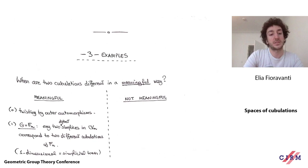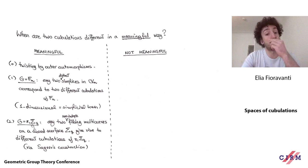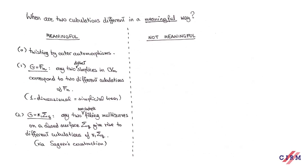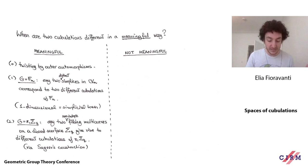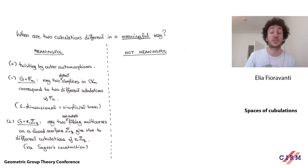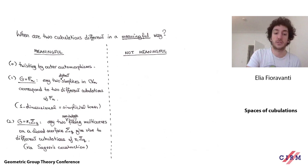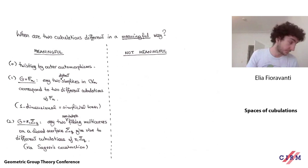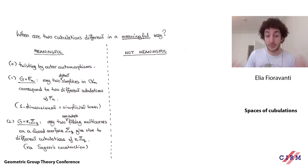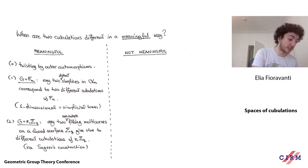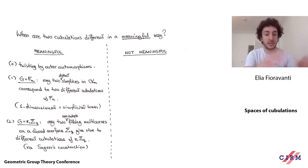A second example is closed surface groups. Whenever you have a multi-curve on a closed surface, you can lift it to the universal cover and consider the dual object to the collection of lifts in the universal cover. By Sageev's construction, this yields a co-compact action on a CAT(0) cube complex. If moreover the multi-curve is filling — meaning it cuts the surface into a collection of disks — you gain properness of the action. So any filling multi-curve gives a cubulation. If you take different non-isotopic multi-curves, you get different cubulations, and I consider these different for meaningful reasons since the whole construction is based on the geometry of the surface.